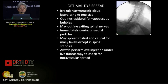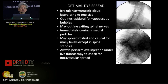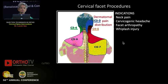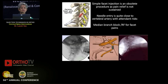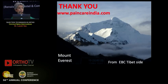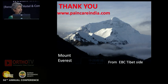You confirm that the dye spread is going to the correct level — C5, C6, or whatever is needed. This is what an optimal dye spread looks like in the cervical region; a muscular spread indicates misplacement. As for cervical facet procedures, I hardly ever do them these days because when you address the myofascial system, these pains disappear.